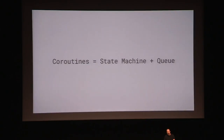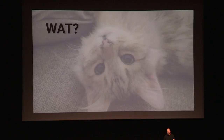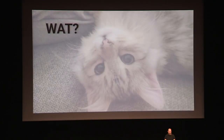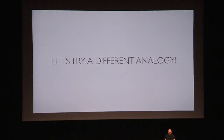Coroutines — the easiest way to explain them is to say it's a state machine and you have a queue. That's coroutines. Let's try a different analogy though, because that didn't really work.